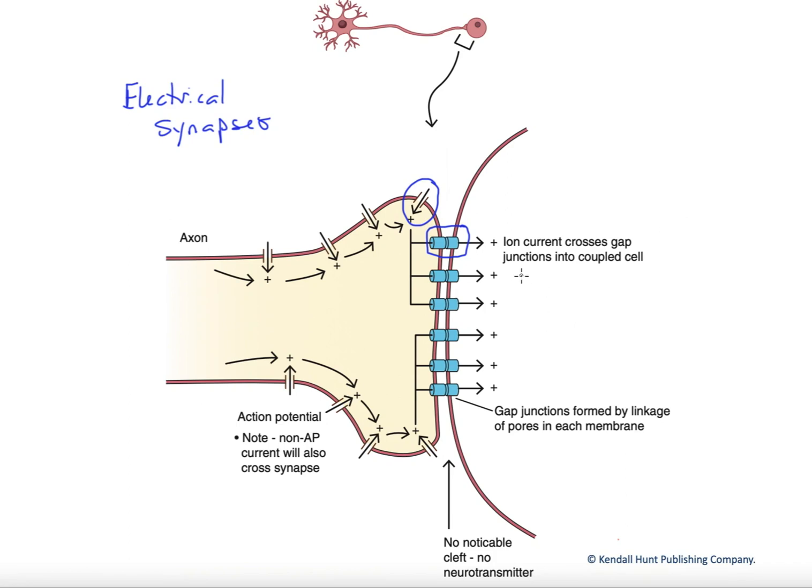Now, electrical synapses are a little less plastic than chemical synapses, meaning they don't modify as much over time as the chemical synapses. Another factor about them is that they're not unidirectional. We could have current flow, as we have it here, left to right, but it could also go right to left in many cases.